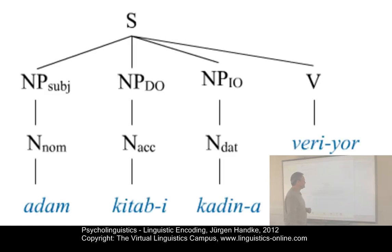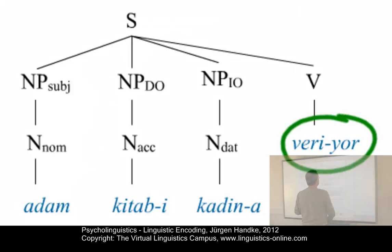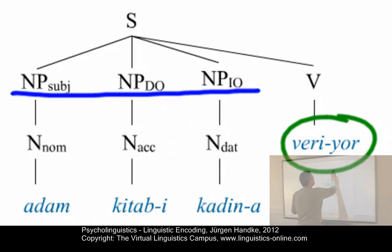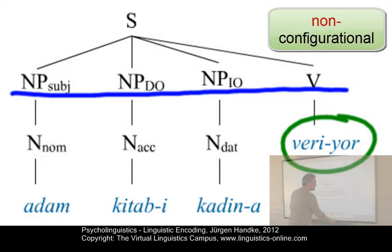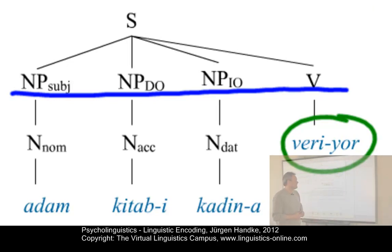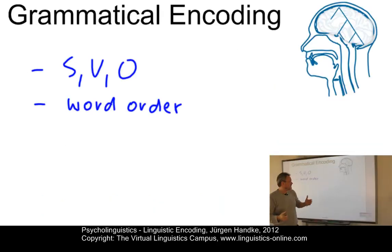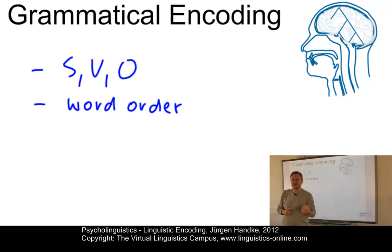Finally, here is Turkish. Let's listen: 'Adam kitabı kadına veriyor.' Again, this is our sentence: 'the man gives the woman the book.' In Turkish, the verb is in the final position. Again, we have a flat structure. Turkish, like Finnish and Tagalog, is a non-configurational language, and the verb is generally in the final position. As a result of these observations across four different languages, we know that the grammatical encoder delivers the language-specific surface form as a functional representation that can now undergo phonetic planning.